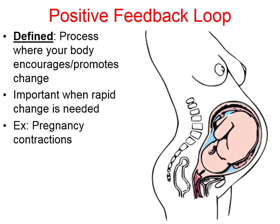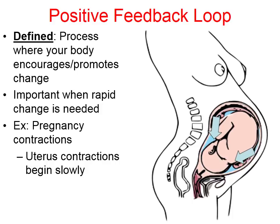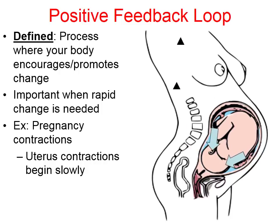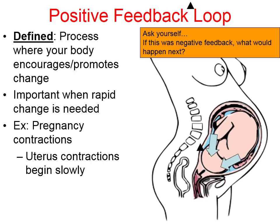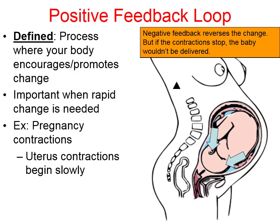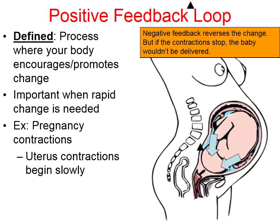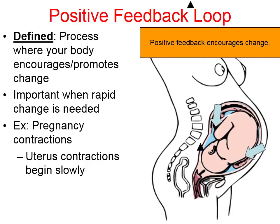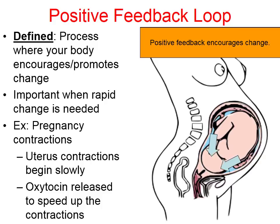One of the best examples of this happens when a woman's about to give birth and she starts to experience pregnancy contractions. Contractions are when muscles in the uterus begin to stretch and contract, ultimately trying to push the child out. There's a nerve in the cervix that sends a signal to the brain, and the brain sends out a hormone called oxytocin throughout the body. If this were negative feedback, the body would try to reverse and stop those contractions — but the baby would never be delivered. So the body responds with positive feedback: oxytocin actually speeds up and encourages the muscle contractions so the child will be born even sooner.